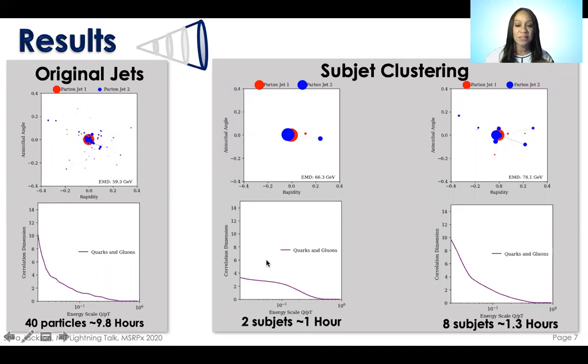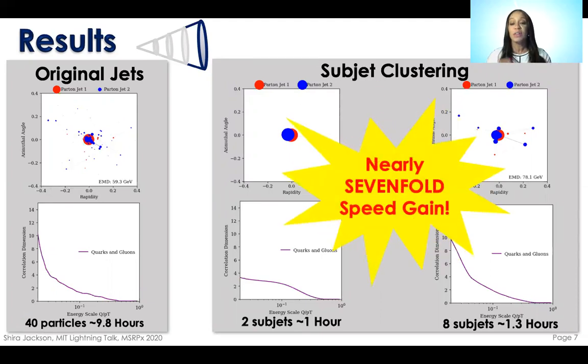We see that two subjets actually overly simplifies it and anything intermediate between two and eight overly simplifies it, although I'm not showing it here. But we do see that there is a nearly seven-fold speed gain when we do this approximation with nearly no loss of efficacy.